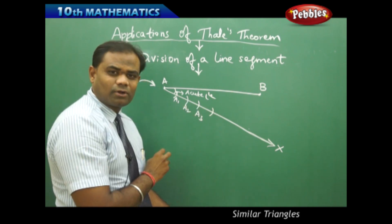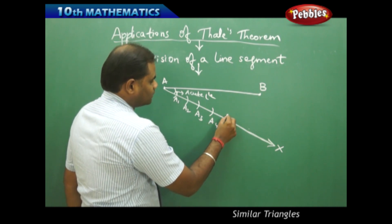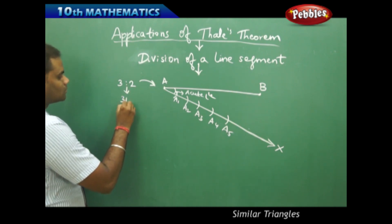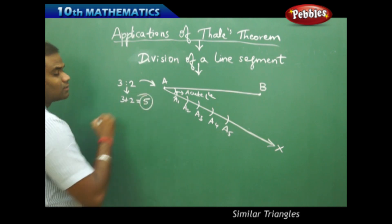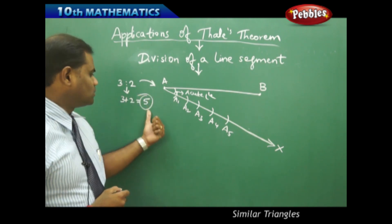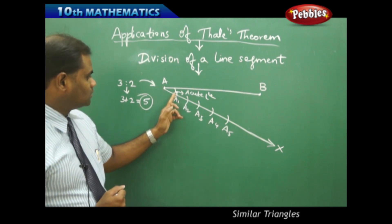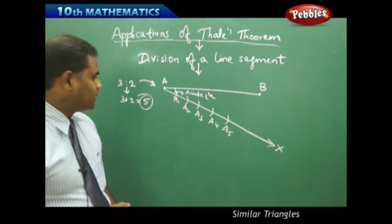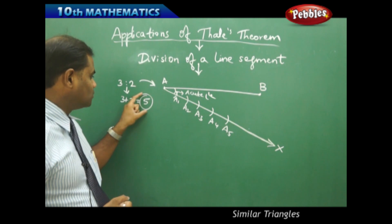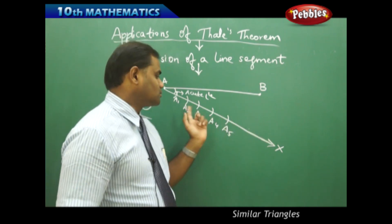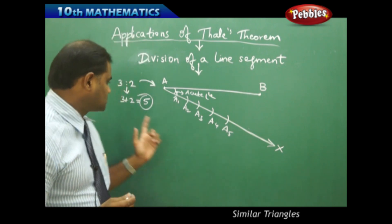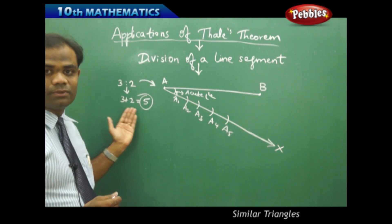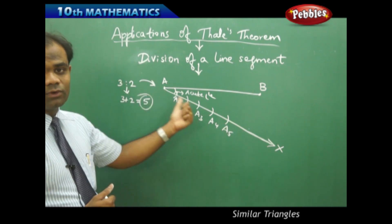Similarly I repeat the process to get A4 and finally A5, because totally this leads to 5 parts — 3 plus 2 equals 5. In order to have 3:2 as the ratio, I divide this into 5 equal parts on the ray AX. The ratio determines the number of times I need to cut to make equal divisions — in this case 5, because 3 plus 2 is 5.